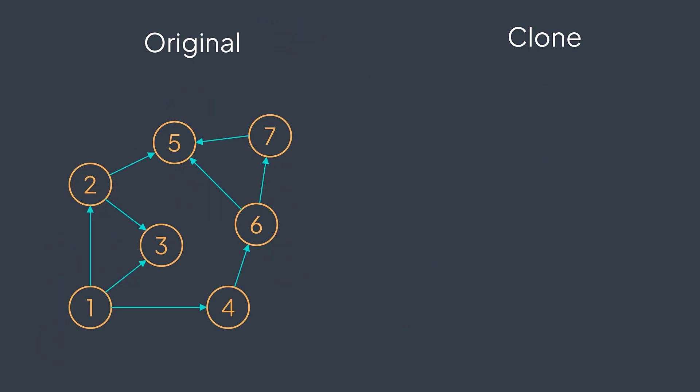Let's try it with the graph. The input node is one, we'll create a copy of it. The first neighbor is two, we go to it, we'll create a new node that has the same value. The first neighbor is five, we go to it. We'll create a new node that has the same value.